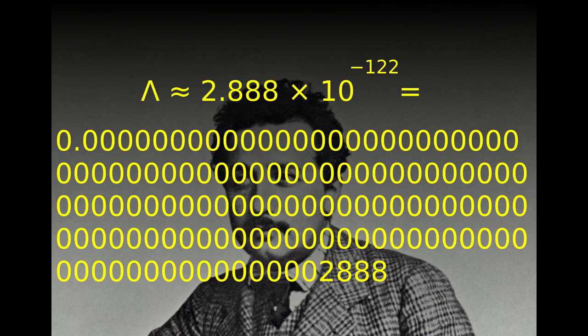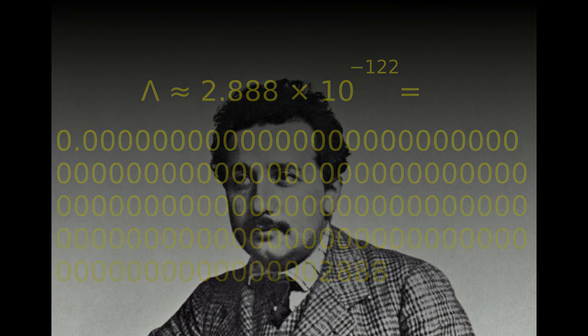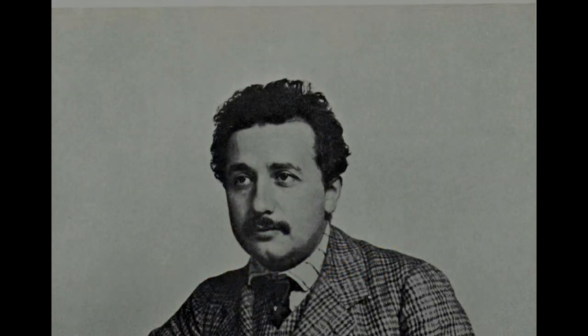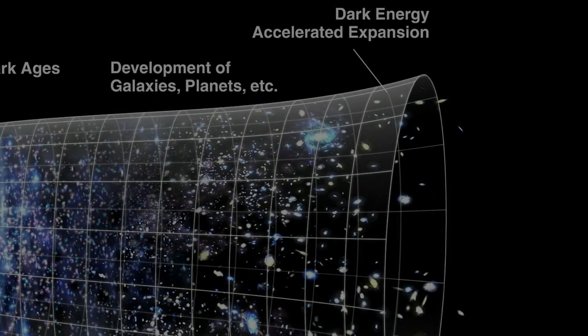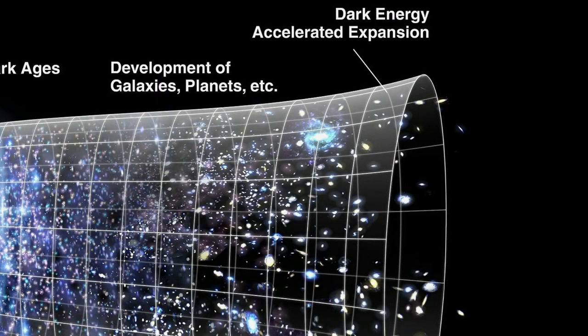Lambda is referred to by many names, such as quintessence, dark energy, vacuum energy, zero-point energy, anti-gravity, and the fifth force. Regardless of what we call it, all names refer to the same phenomenon: that the universe's expansion is not slowing but accelerating.